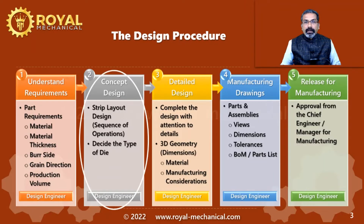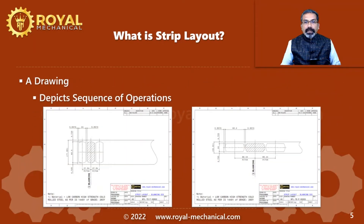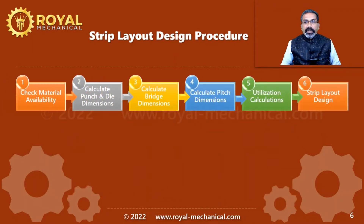As mentioned in the previous video, step two of the design procedure is to design the strip layout. Strip layout design is a six-step procedure. In simple words, a strip layout is a drawing which depicts the sequence of operations to manufacture the part. What you are seeing on the screen is the strip layout drawing for the power screw support bracket of a car scissor jack.